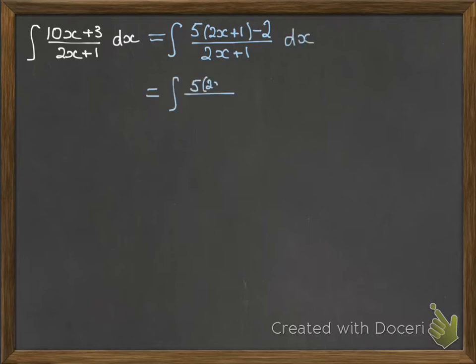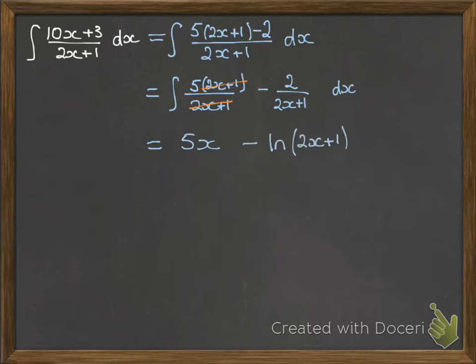And then we can separate out the fraction like we did on the first one into its two pieces. Which helps us, because now we can cancel that 2x plus 1, so that we've just got, if we're integrating that 5 that gets left over, that becomes a 5x. And integrating the other piece, that's log of 2x plus 1.